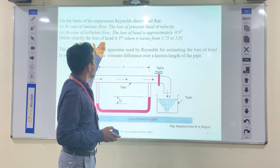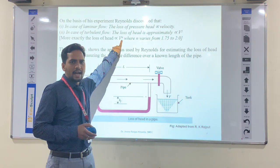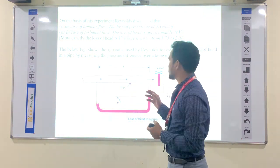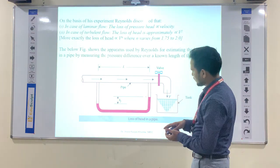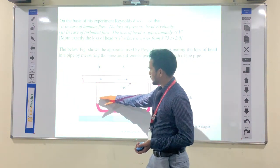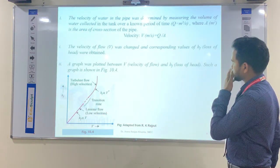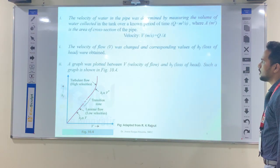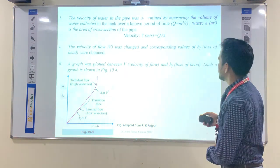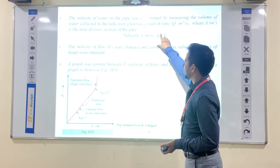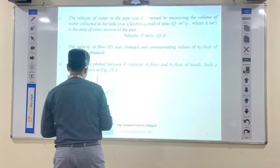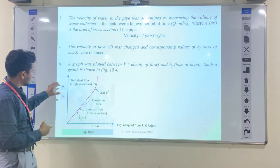More exactly, the head loss is directly proportional to V to the power n, where n is the exponent and its value varies from 1.75 to 2. There is some head loss visible since the water level is not constant. The velocity of water was determined by measuring the volume of water collected at the tank over a known time period. The velocity formula is V = Q/A, where Q is discharge and A is the cross-sectional area.